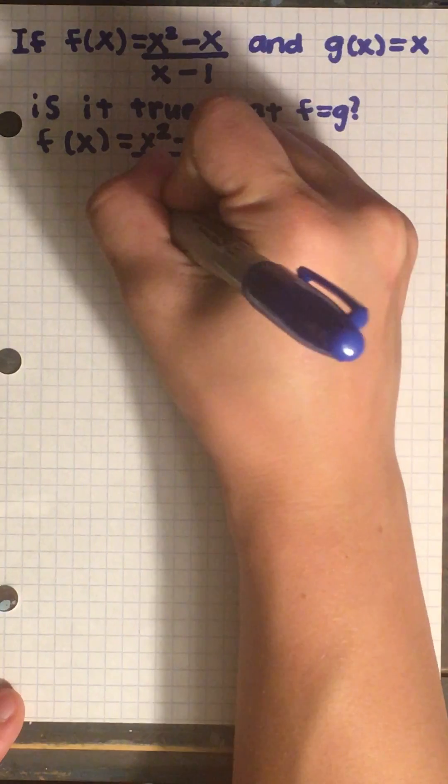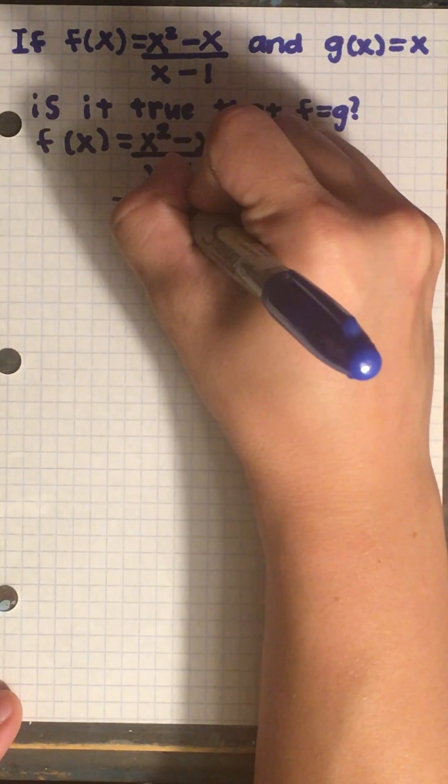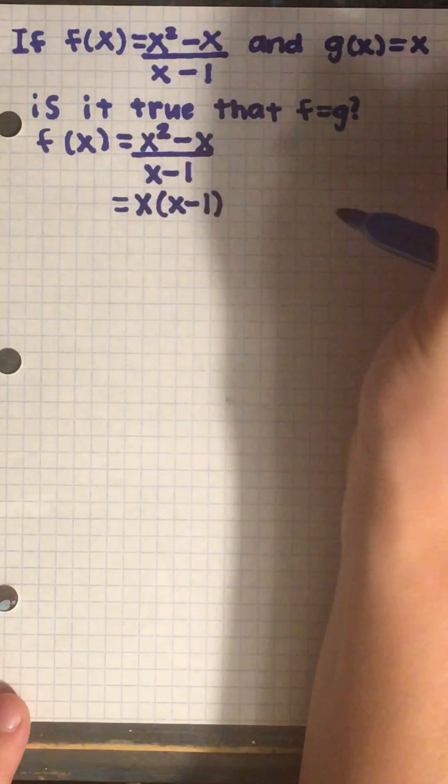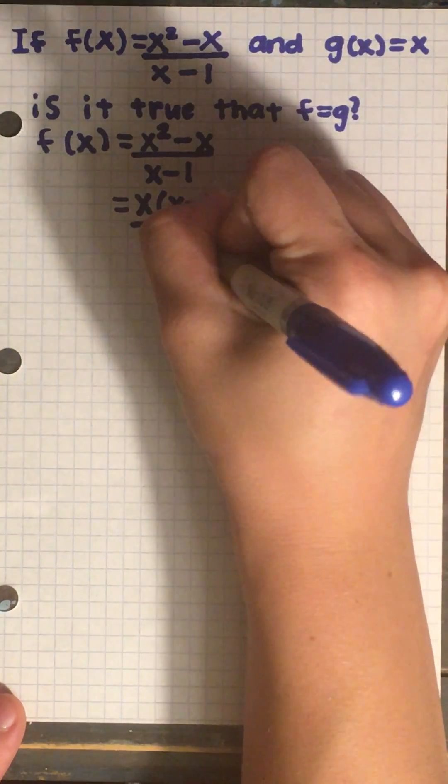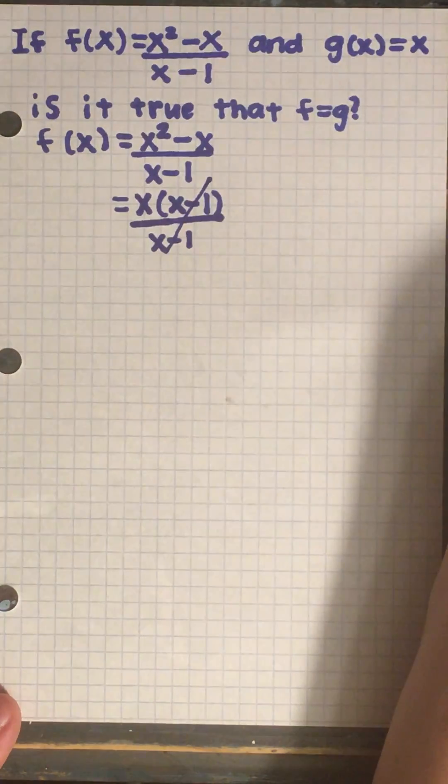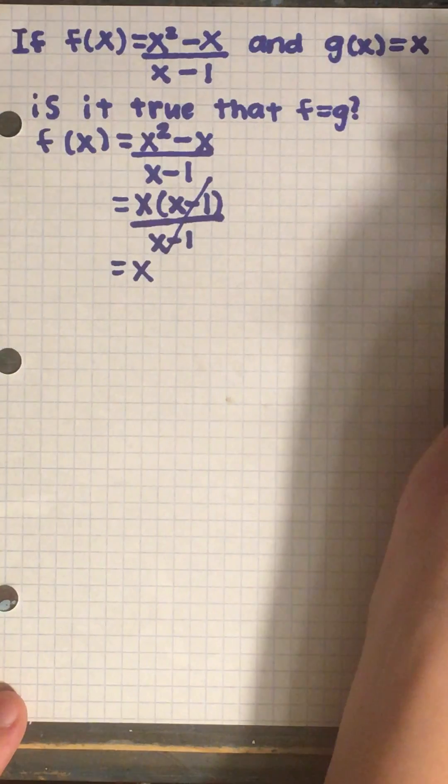We can pull an x out. So you have x times x minus 1. And then on the bottom, you'll also have x minus 1 still. Now you can see that the x minus 1s cancel each other out. So all we're left with is x.